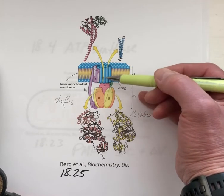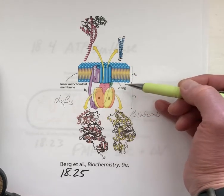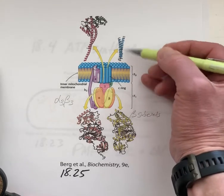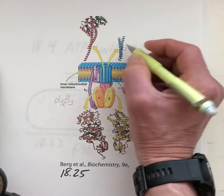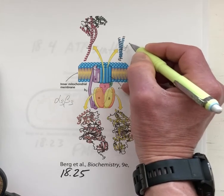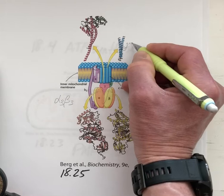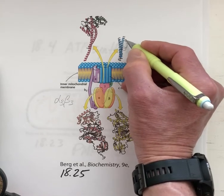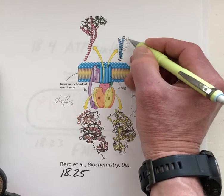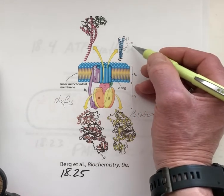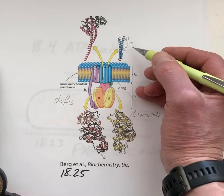This ribbon diagram illustrates the structure of one C subunit. There's a small detail here which I'll highlight, which is that there's a carboxylic acid functional group here, which is either protonated, carrying the proton, or it will be deprotonated and therefore charged.